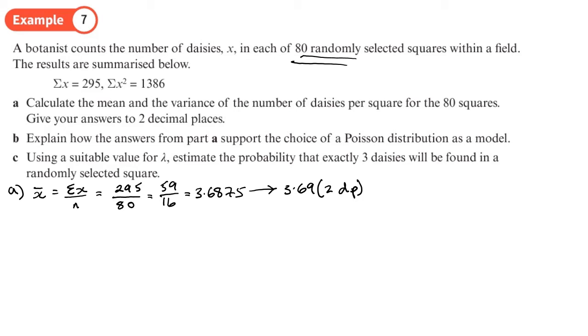Then we want to work out the variance. Again, strictly speaking, because we have got a sample, we should use s squared for the variance. You'll see in the book they use sigma squared. You're not going to lose marks if you use sigma squared, you're not going to lose marks here if you put mu, but just be aware they do have slight differences. So I'm going to use s squared—that's the proper way to do it.